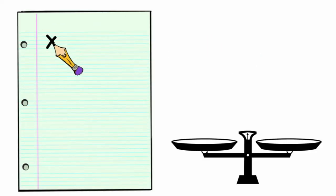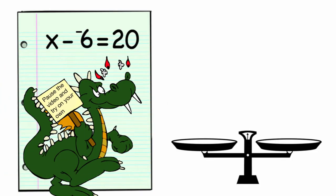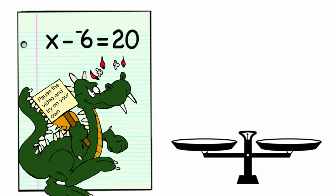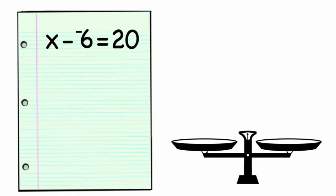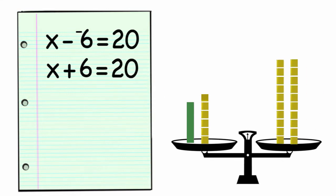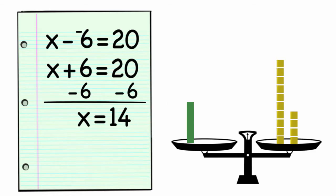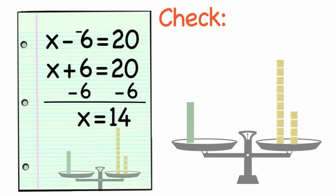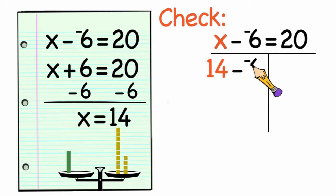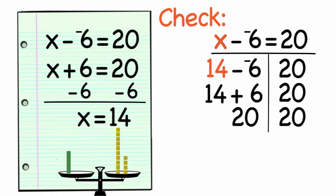Now let's look at the problem x minus negative 6 equals 20. Again, pause the video and try the problem on your own. To solve this, I'm first going to rewrite the subtraction problem as adding the opposite. So that would give us x plus 6 is equal to 20. Next, we subtract 6 from both sides of the equation, leaving us with x equals 14. Let's do a quick check. 14 minus negative 6 is equal to 14 plus 6, which is equal to 20. 20 equals 20. Our problem checks.